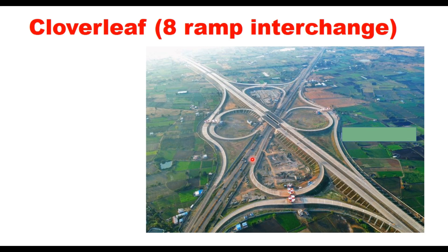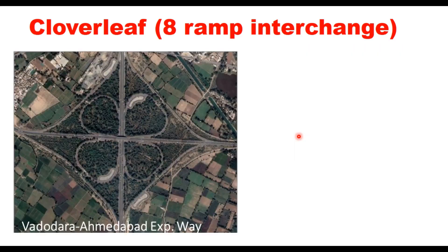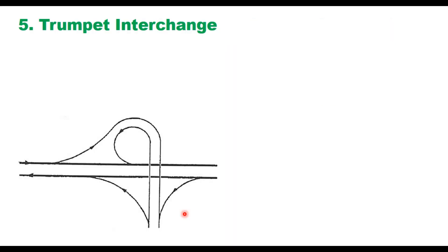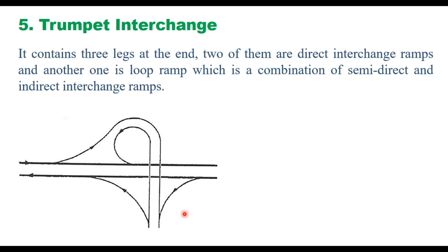The size of each loop and ramp may differ depending on site conditions, with speeds specified accordingly. On the Vadodara-Ahmedabad Expressway, all four loops are of almost the same size — a symmetrical interchange. At the Yamuna Expressway, all four loops are of different sizes depending on available land. The trumpet interchange is provided on three-leg junctions, particularly at T-junctions. It contains three legs: two are direct interchange ramps (outer connections for left-turning movement) and one is a loop ramp, which is a combination of semi-direct and indirect interchange ramps for right turns.